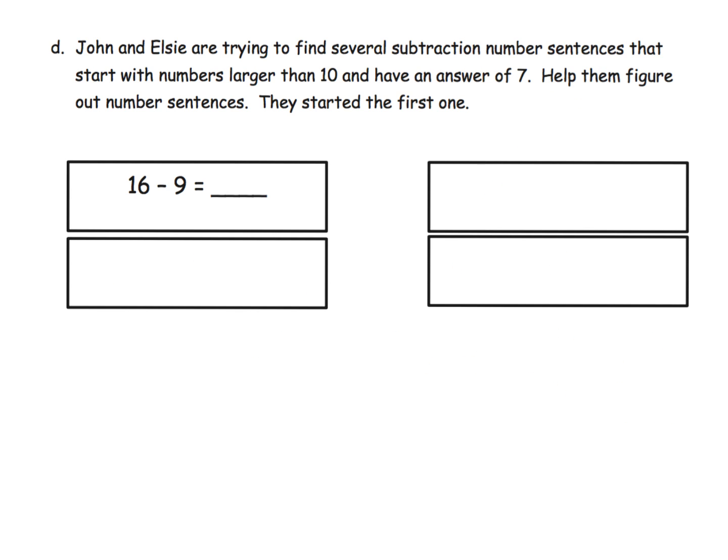Now here it says you've got these constraints. You're trying to find several subtraction sentences that start with numbers larger than 10 and have an answer of 7. So we're always going to be looking for something that has an answer of 7. Find a bunch. And you can see that they've started us off with 16 minus 9 is 7.